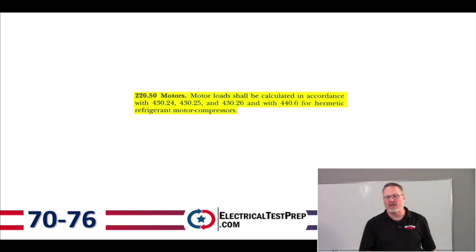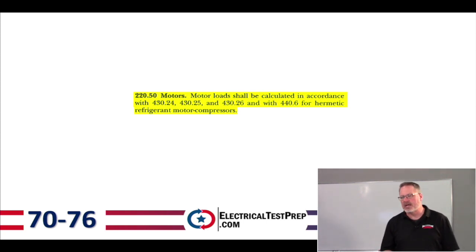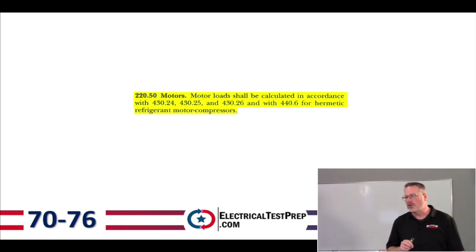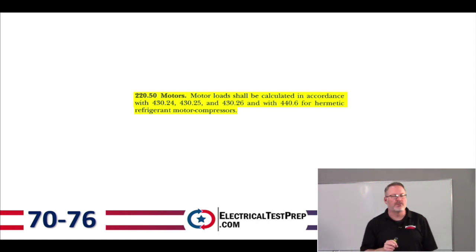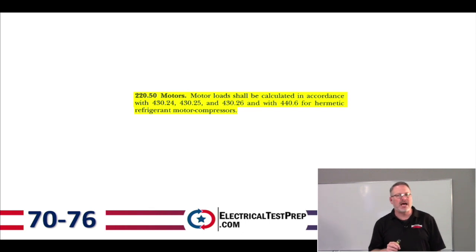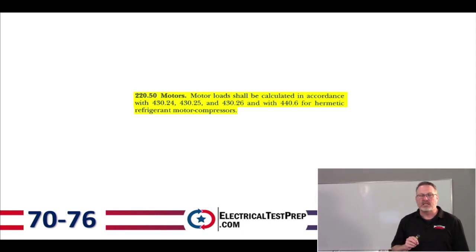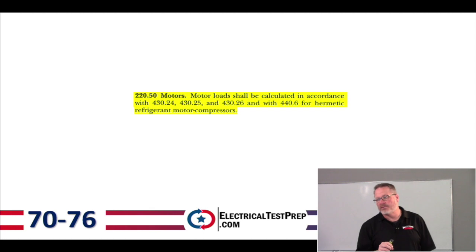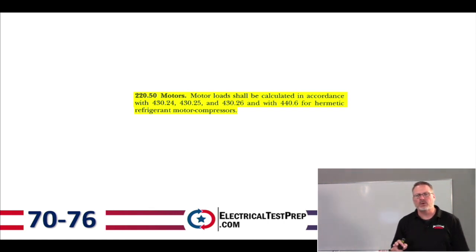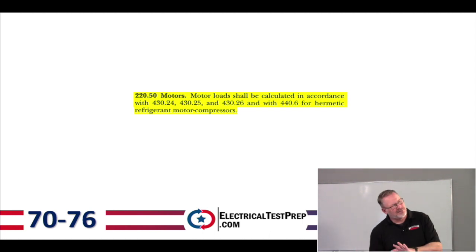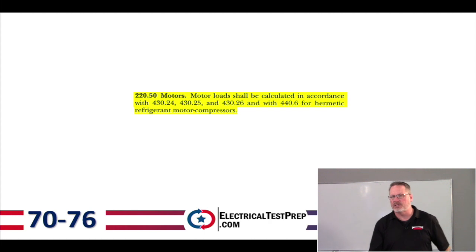Section 220.50, Motors — also on page 76. Motor load shall be calculated in accordance with 430.24, 430.25, and 430.26, and with 440.6 for hermetic refrigerant motor compressors. So to get the volt-amps for motors, we find that information in the motors chapter and then bring it into our calculation.